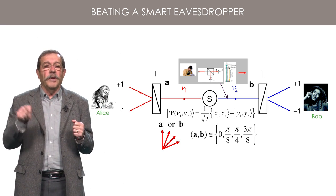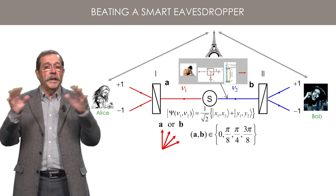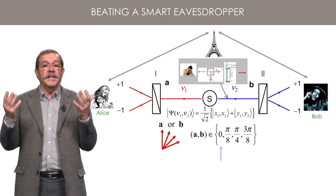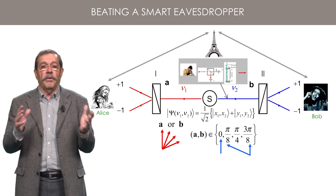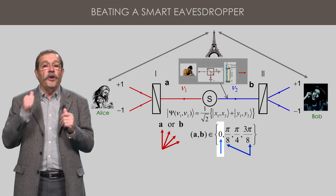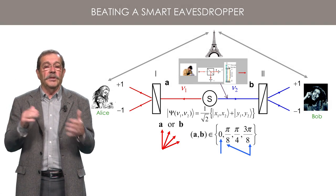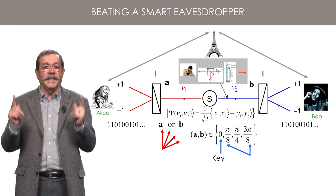Now, when the sequence is finished, Alice and Bob can communicate on a public channel to know the cases when the angles were 0 and when they were pi over 8 or 3 pi over 8. The first series of data corresponding to an angle 0 between the polarizers allow Alice and Bob to obtain the two identical keys.